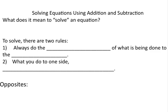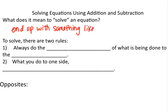So what does it mean to solve an equation? Basically that means we're going to end up with something that looks like x equals some number. So basically I want a variable — could be x, could be y, could be z, could be whatever — and I want it to equal a number.